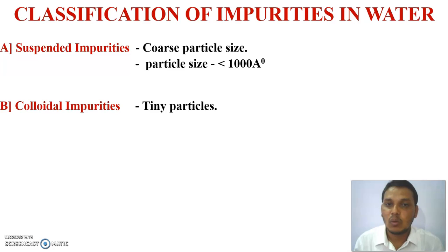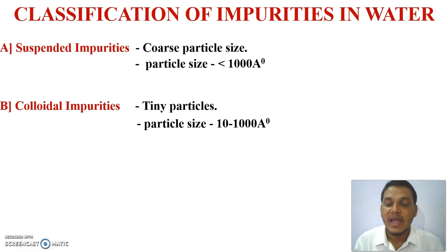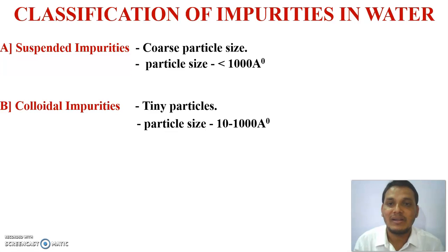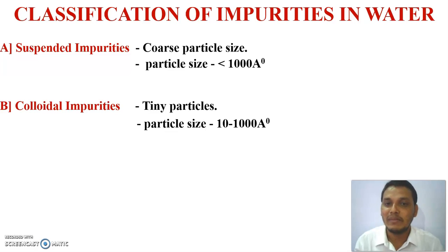The second type is colloidal impurity, which contains tiny particles of mud, organic, and inorganic waste. The particle size of colloidal impurities is in the range of 10 to 1000 angstroms. Colloidal impurities cannot be removed by filtration techniques; they are removed with the help of the coagulation method.